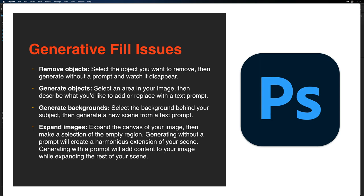We're talking about generative fill and what sort of problems it can solve. It's great at removing objects — you can select an object you want to remove and generate without a prompt, and it basically becomes a super content-aware fill. You can use it to generate objects, create all new backgrounds, or expand photos. I tend to use this a lot when fixing older historical photos and it does a particularly nice job.